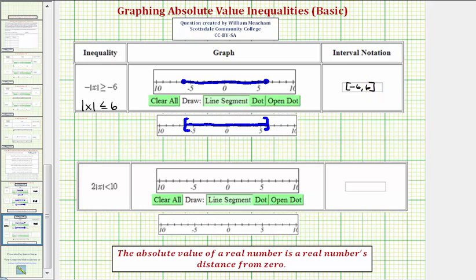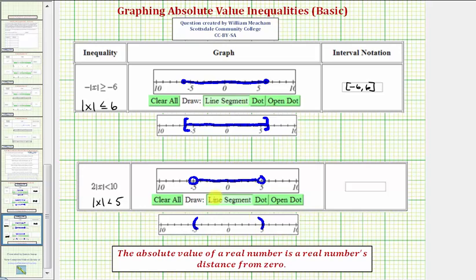For our last example, we have two times the absolute value of x less than ten. Again, our goal is to first solve for the absolute value of x, so we divide both sides by two. Since we're dividing by a positive, we do not reverse the inequality symbol. So we have the absolute value of x less than five — we're looking for all real numbers whose distance from zero is less than five units, not equal to five units. The values are between negative five and five, not including the endpoints. So we use open points — or rounded parentheses — and graph all the values between.